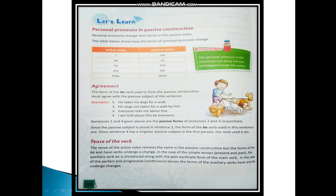Now let us learn about personal pronouns in passive construction and how they change their forms. 'I' becomes 'me,' 'we' becomes 'us,' 'he' becomes 'him,' 'she' becomes 'her,' and 'they' becomes 'them.' You have to learn this table so that when you change active into passive voice, you use the correct pronoun forms.